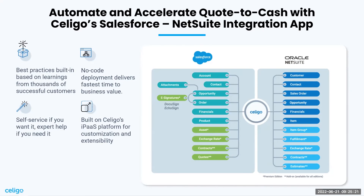Within our pre-built Salesforce NetSuite integration app, here are the usual suspects contained within that integration: syncing account information into NetSuite for customers, keeping contacts in sync, pulling opportunities from Salesforce, including sales orders inside of NetSuite, syncing financials between the two systems, as well as syncing items and products available to be sold — whether those are tangible goods, services, or software SKUs. Also included are fulfillment details for product-oriented companies, and syncing exchange rates, contracts, quotes, and estimates.